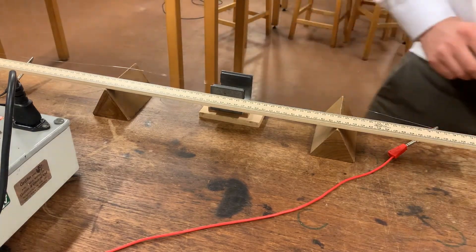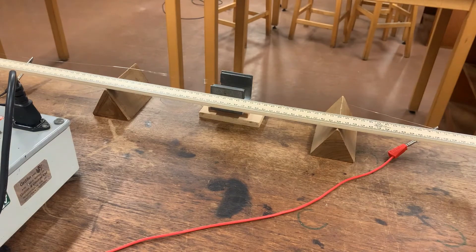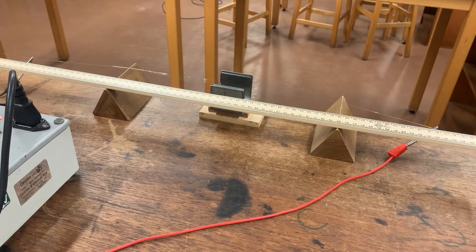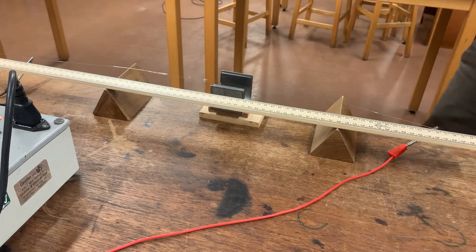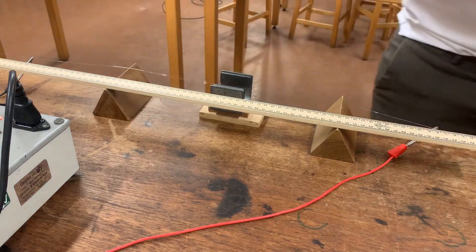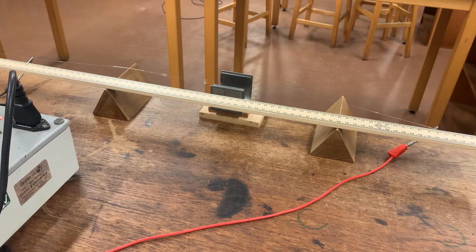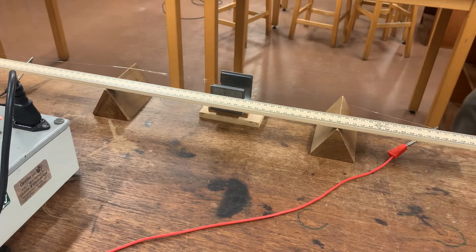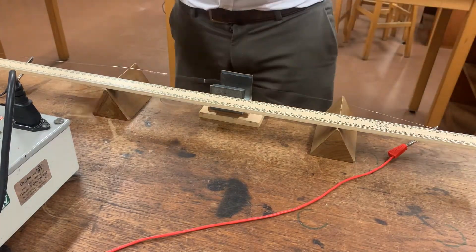This end is 20 centimeters. And to the nearest millimeter, 20.0. This one's reading 53.4. So the difference between them is going to give me the length of wire for that particular mass.